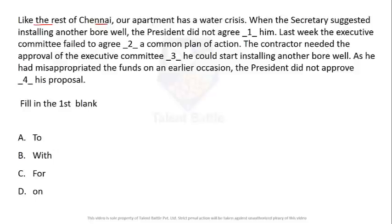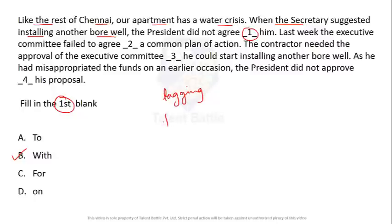Like the rest of Chennai, our apartment has a water crisis. Fill in the first blank: 'When the secretary suggested installing another Borewell, the president did not agree ___ him.' The answer is option B — 'with him.' 'With' gives a relation between two people, indicating togetherness — whether they are tagging along or going in the same direction.